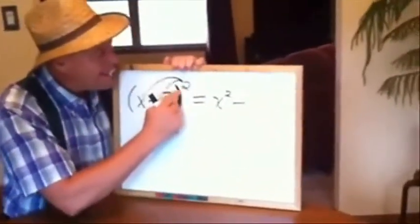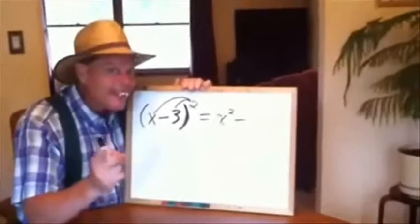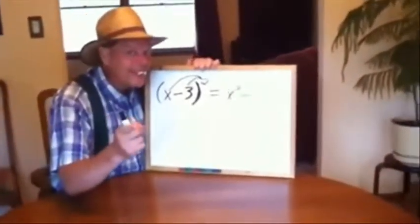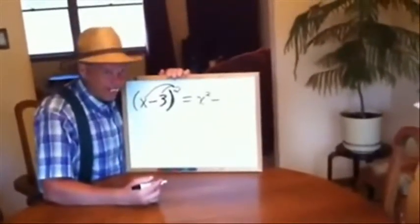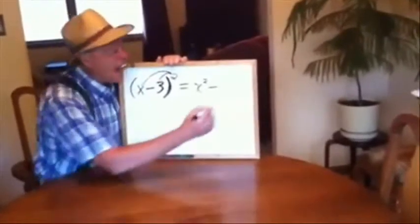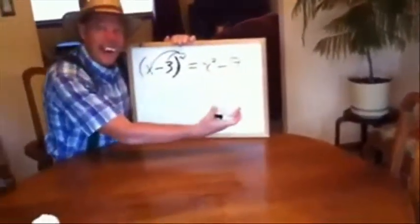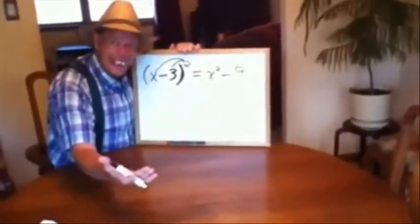Now when you have that two on top of that three, that means to take a three and times it with another three. So when you take a three and times it with another three, that gives you a nine. And there's our answer. Ain't that easy?